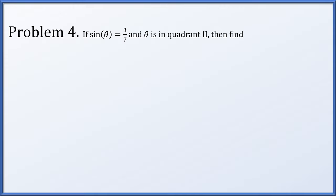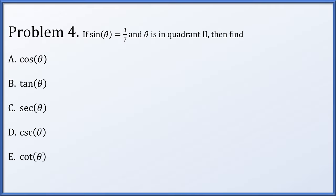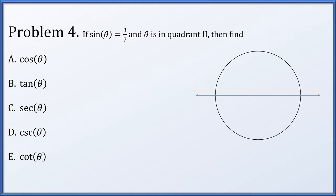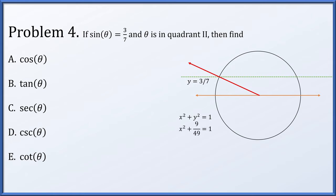In problem 4, we're not given the angle theta, but we are told that the sine of theta is 3/7, and that it is an angle in quadrant 2. We're going to find the cosine, tangent, secant, cosecant, and cotangent of this angle. Here is our standard unit circle with the x-axis drawn. We're given that the sine of theta is 3/7, which means the y coordinate corresponding to that angle is 3/7, but it's in quadrant 2. So of the two intersections with the line y = 3/7, the one in quadrant 2 is our angle theta. The circle obeys the equation x² + y² = 1. We were given the y coordinate to be 3/7, the square of which is 9/49. This allows us to solve that x is either plus or minus 2√10 divided by 7. But we're in quadrant 2, which means the x coordinate is negative: x = −2√10/7.